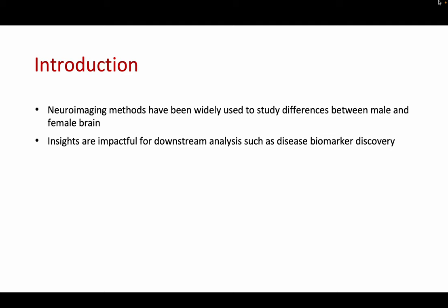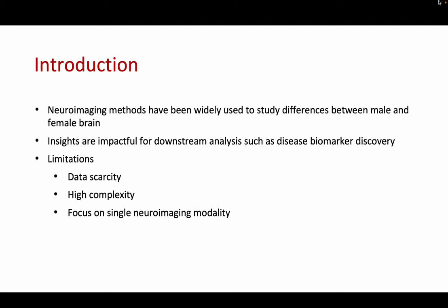However, there are several limitations. Neural imaging data are scarce and high-dimensional, causing model overfitting to be a serious problem which is detrimental to model generalizability. Also, most existing studies focus on a single neural imaging modality. Biological systems are more completely described by combining structural and functional analysis. For instance, structural MRI captures anatomical details, while functional MRI captures the dynamics of brain activities by measuring changes in brain oxygenation. Studies using only a single modality miss out on cross-modal interaction effects.